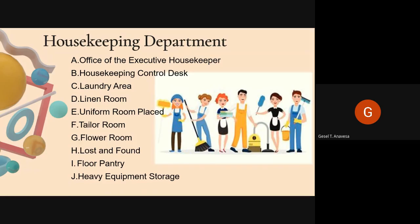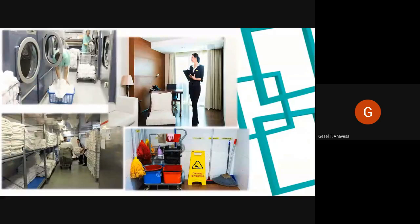The Heavy Equipment Storage is a room to store bulky items such as vacuum cleaners, shampoo machines, and others. These are the sub-departments of the Housekeeping Department, including the laundry area, linen room, floor pantry, and the executive housekeeper's office.